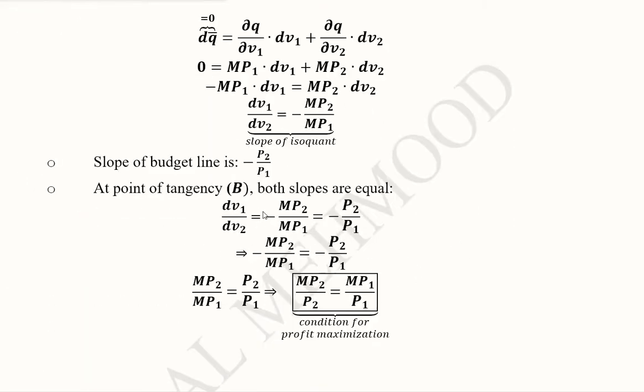Now we equate these two values. These two terms are representing the isoquant slope and this final term is representing the isocost slope. This is happening at the point of tangency B. We keep these terms because they are more economically meaningful—these are the ratios of the marginal products and these are the ratios of the prices.